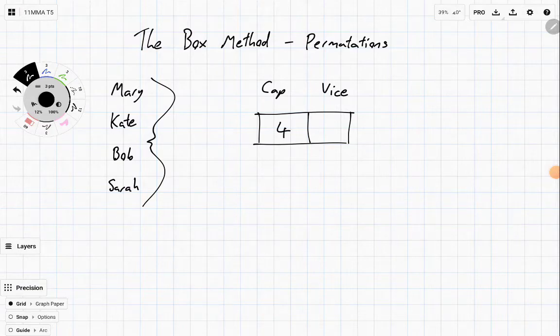And then for the vice, well it's got to be between the three who are left over. So if Mary gets chosen, it's either Kate, Bob or Sarah. If Sarah gets chosen, it's either Mary, Kate or Bob. So there's only three options for the vice.